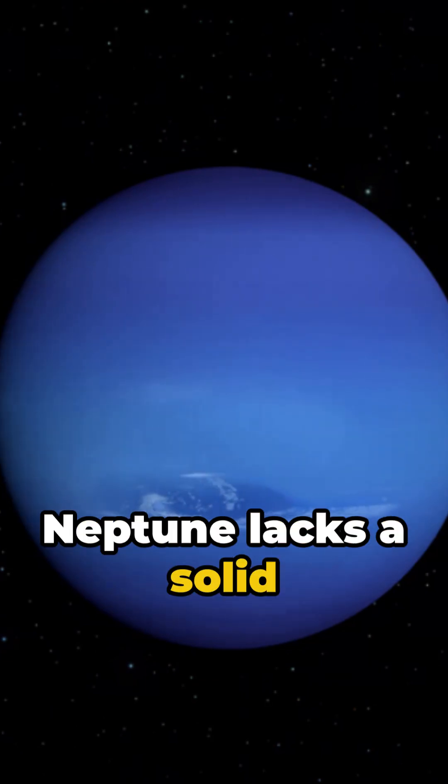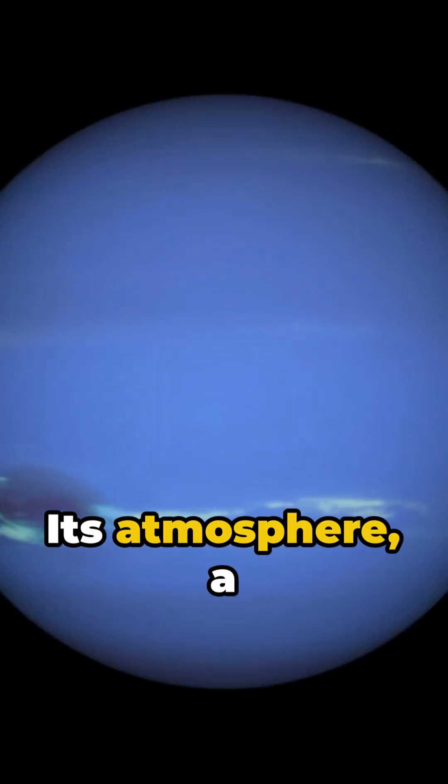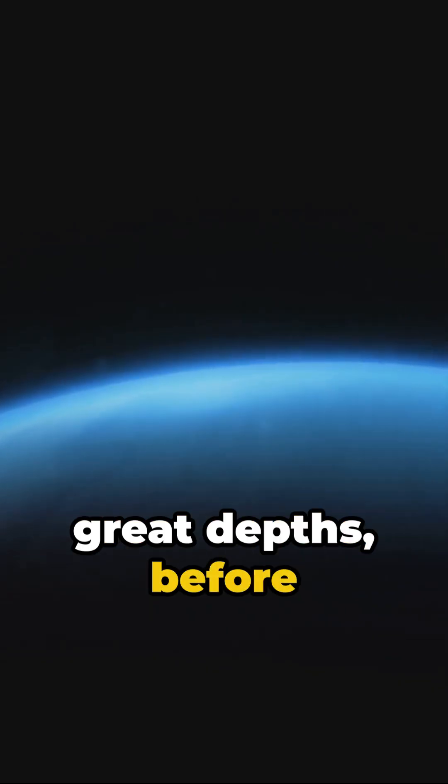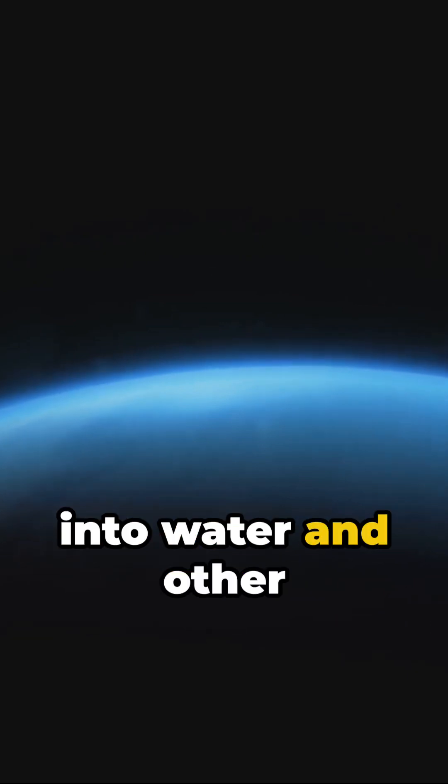Unlike Earth, Neptune lacks a solid surface to walk on. Its atmosphere, a cocktail of hydrogen, helium, and a dash of methane, extends to great depths before gradually merging into water and other melted ices.